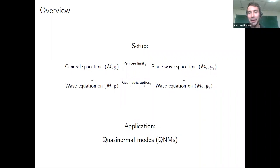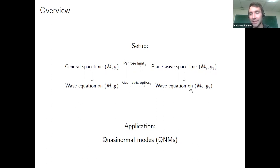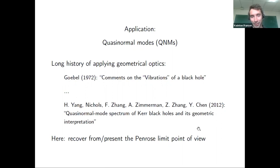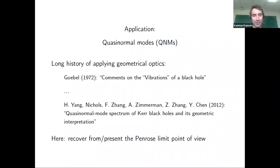Now I've reviewed the Penrose limit and explained that plane waves are the harmonic oscillators of spacetimes. Rather than formally showing the Penrose limit captures the geometrical optics approximation, I'll apply it to quasi-normal modes. These have a long history of being understood via the geometrical optics approximation — two references spanning 40 years, with the last dealing with Kerr black holes, which are non-trivial even in the geometrical optics approximation.